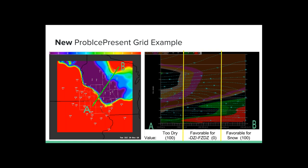Let me give a quick overview of what the prob ice change looks like. Going from A to B on this cross-section — on the southwestern side towards point A, the sounding is too dry, which in the old prob ice would give zero, but now it's going to be 100. The environment favorable for drizzle or freezing drizzle, where you have saturation up to one kilometer but temperatures still warm enough to contain supercooled droplets, will still get zero — same as before. An environment favorable for snow still gets 100 prob ice. The main difference is that area on the left where you'll now be assigned 100.